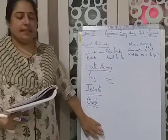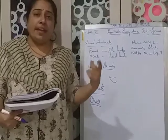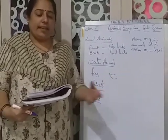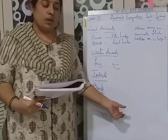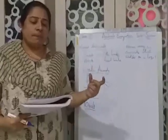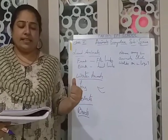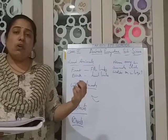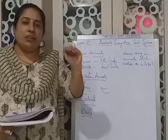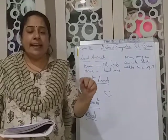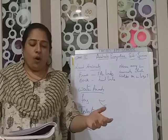Next, coming to birds. The forelimbs of a bird are in the form of wings, which help them to fly. The wings have feathers and are attached to the breastbone of the bird with the help of strong muscles. These muscles enable the bird to flap its wings and fly. When a bird lands after a flight, it uses its hind limbs. It also uses them to walk, run, hop, and perch.